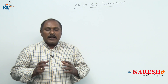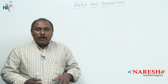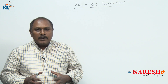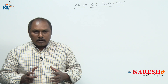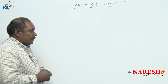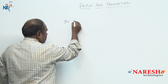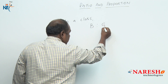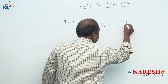First of all, let us try to know what is Ratio. The definition of Ratio — it is a comparison between two or more similar quantities. Let us take a small example: in a class, the number of boys and girls are in the ratio of 3 is to 2.